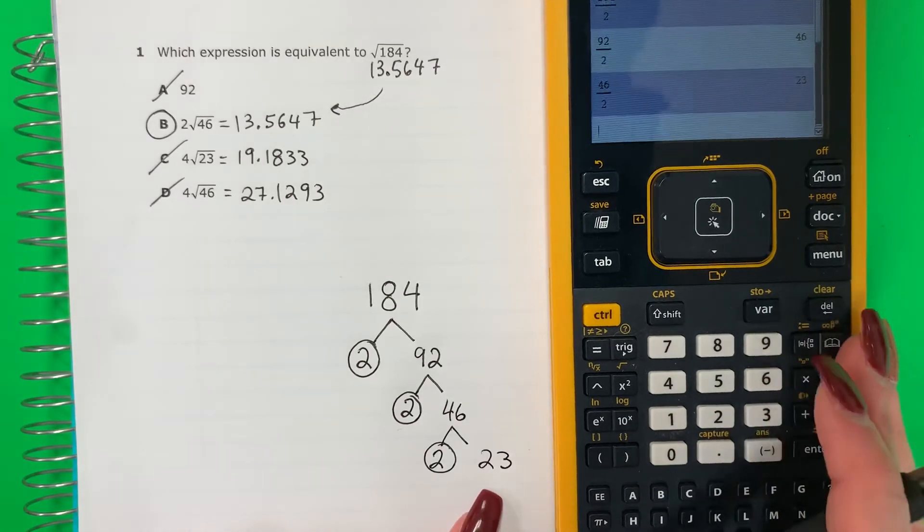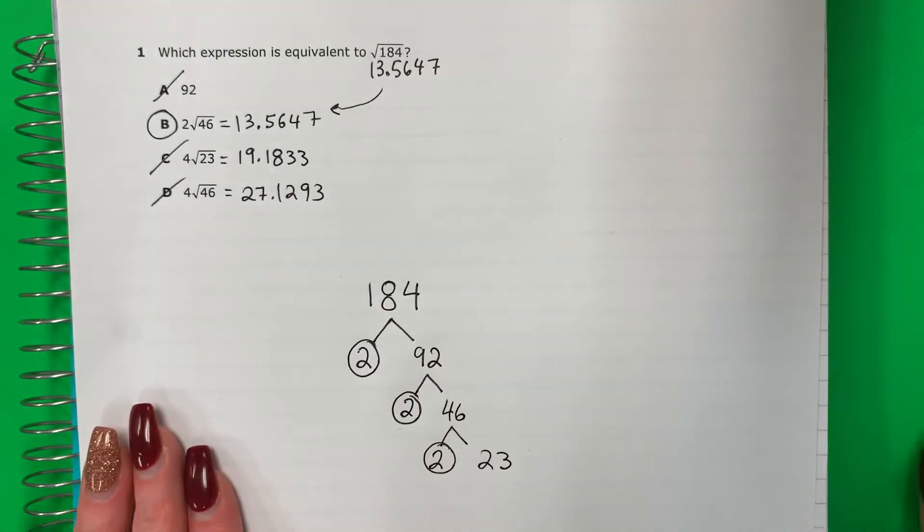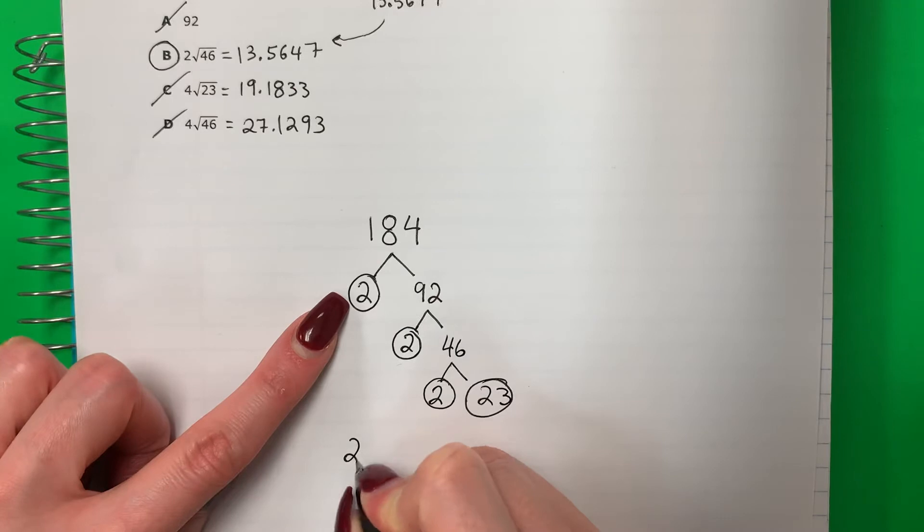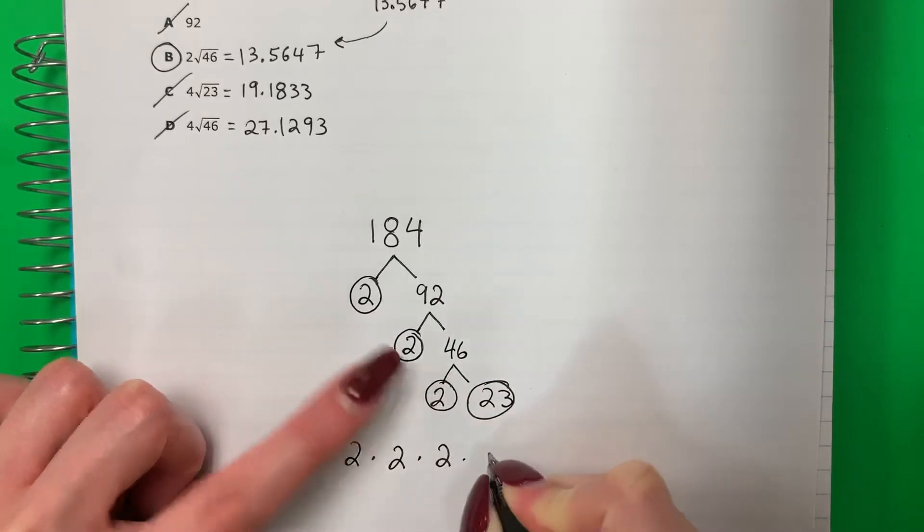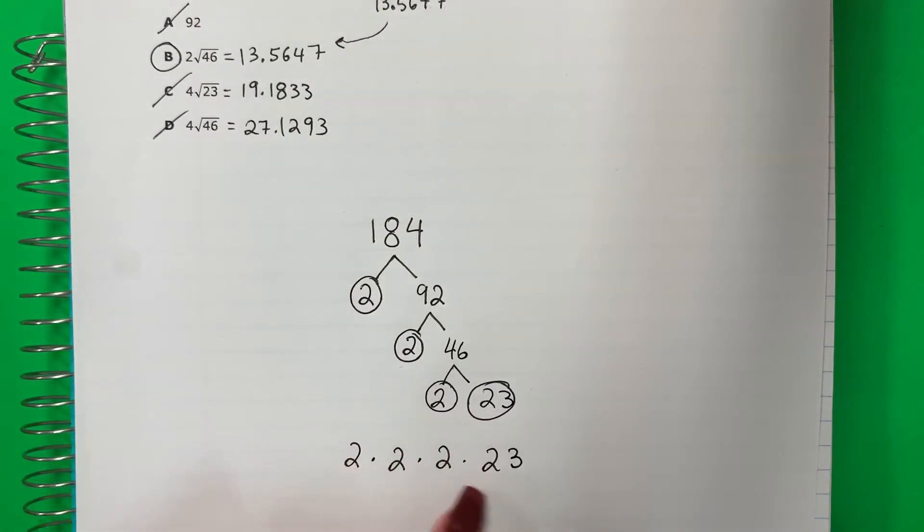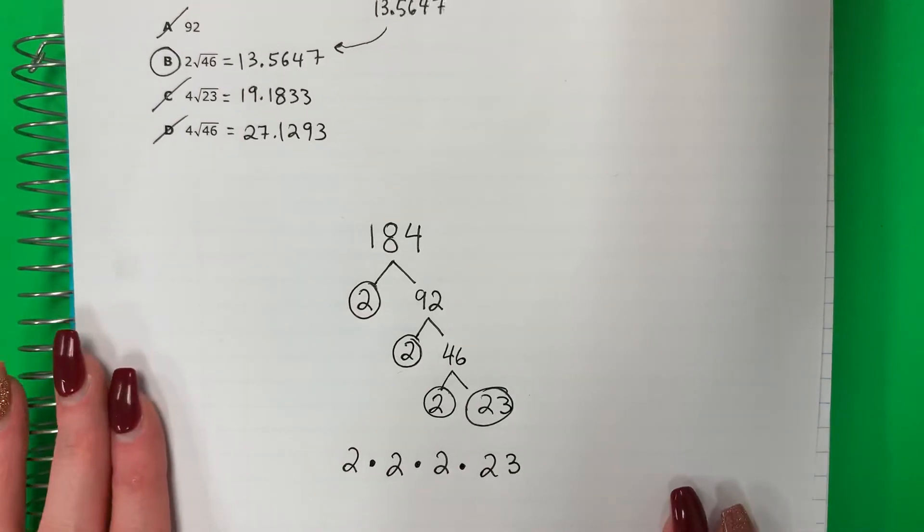And 23, there are no numbers I can multiply to get 23. No hay números que puedo multiplicar para tener 23. This is as far as I can go. There's no other numbers. So my factors are, mis factores son 2 times 2 times 2 times 23. Dos por dos por dos por 23. This is times, es por, it's multiply, multiplicación.